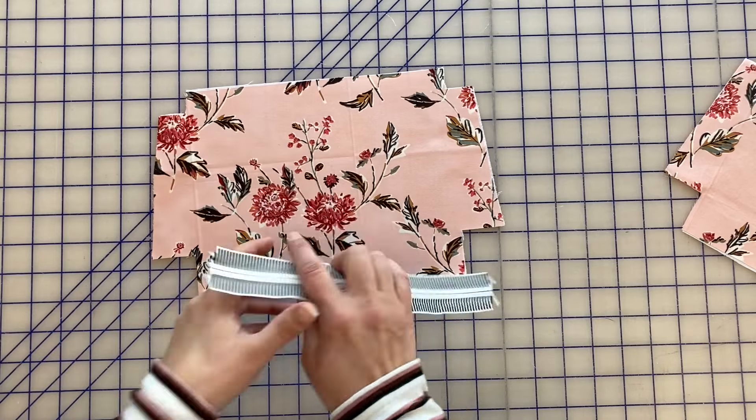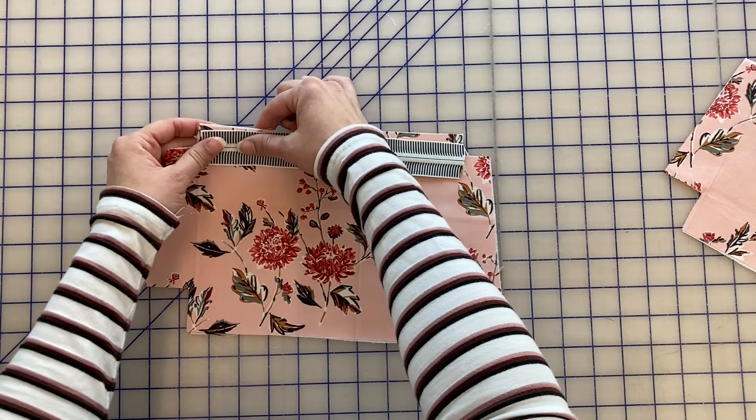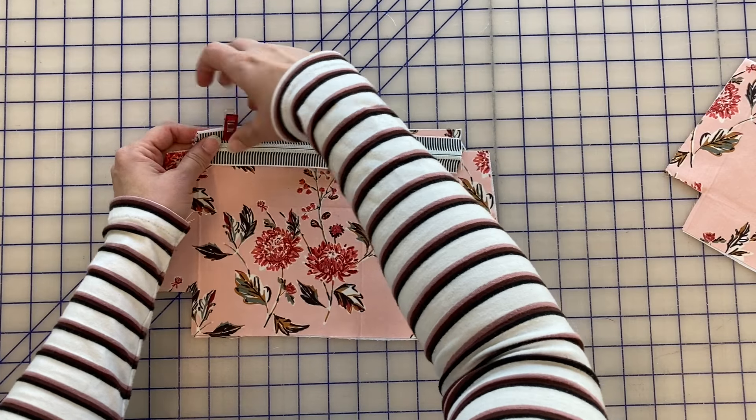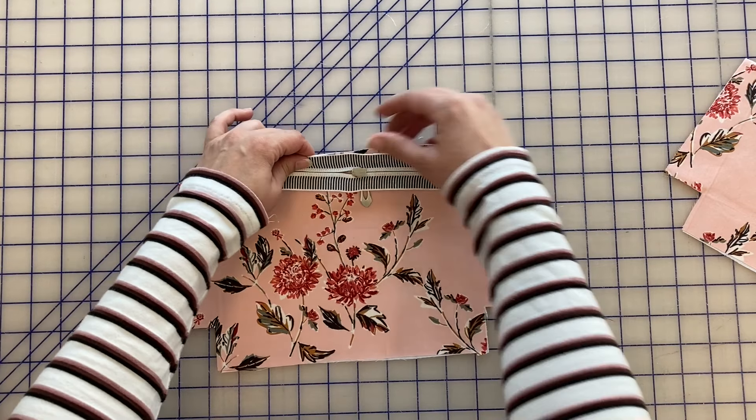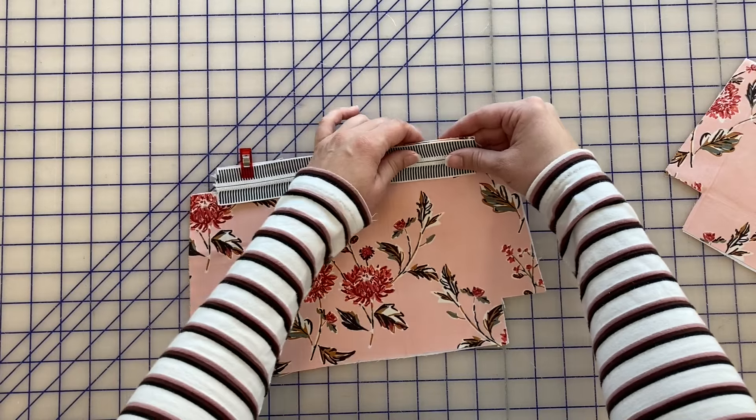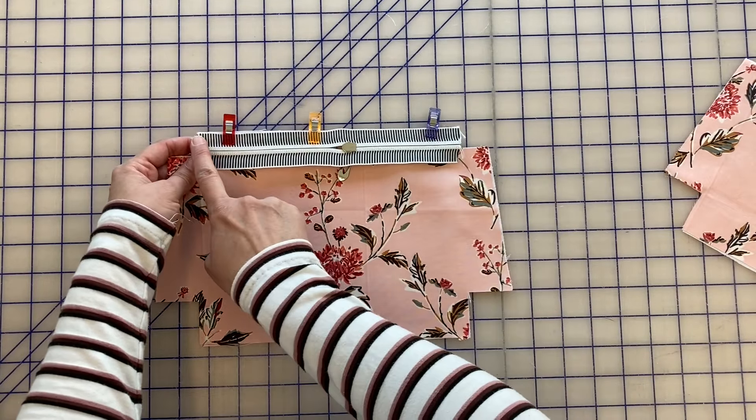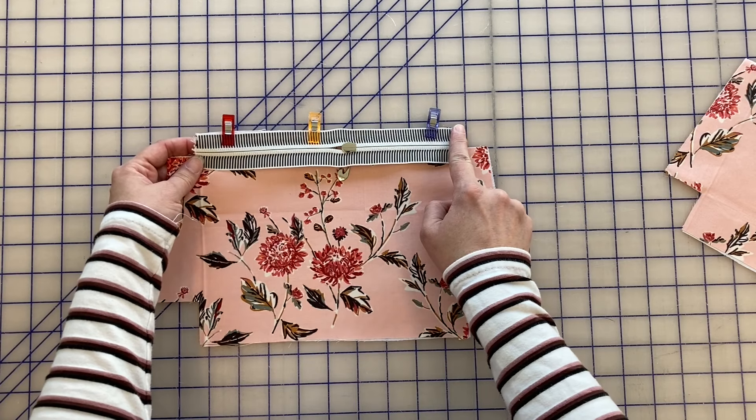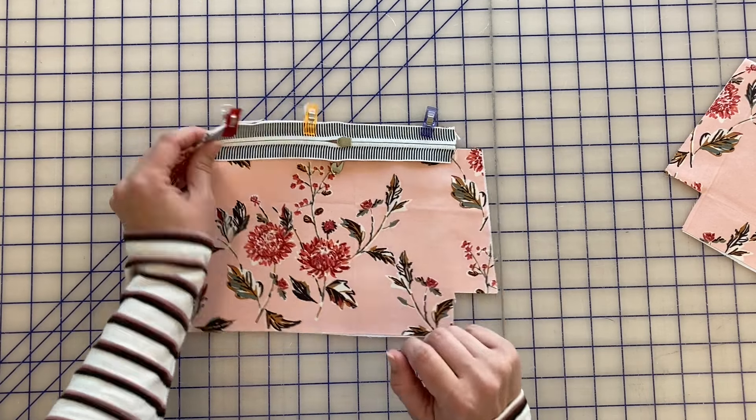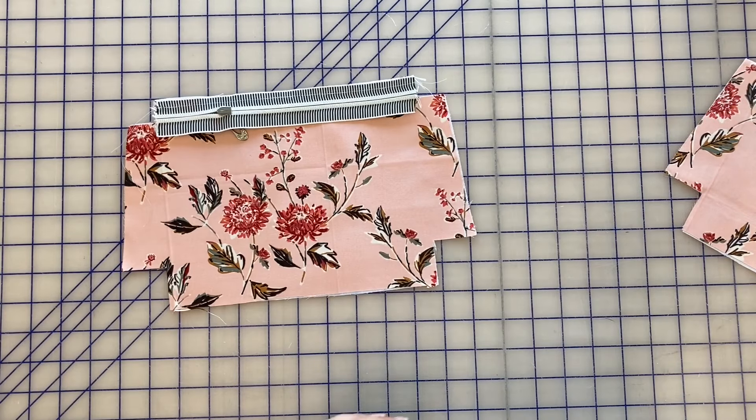So the first step is you only take one side and you take your zipper and you're going to clip it in place along the top face down. Then you're going to take it to the sewing machine and stitch along here with a quarter inch seam allowance.